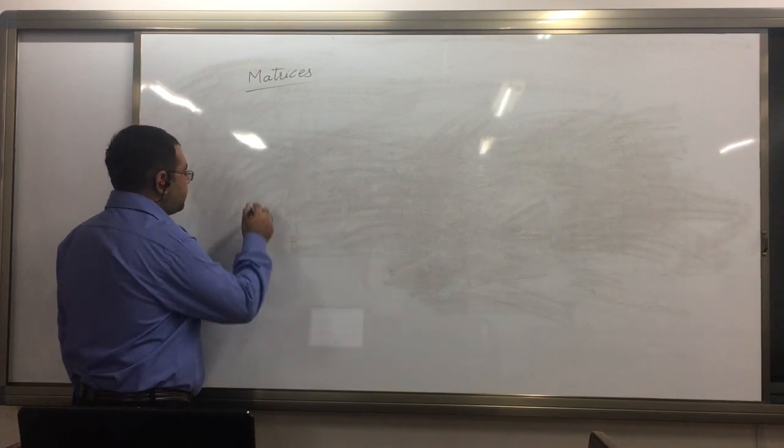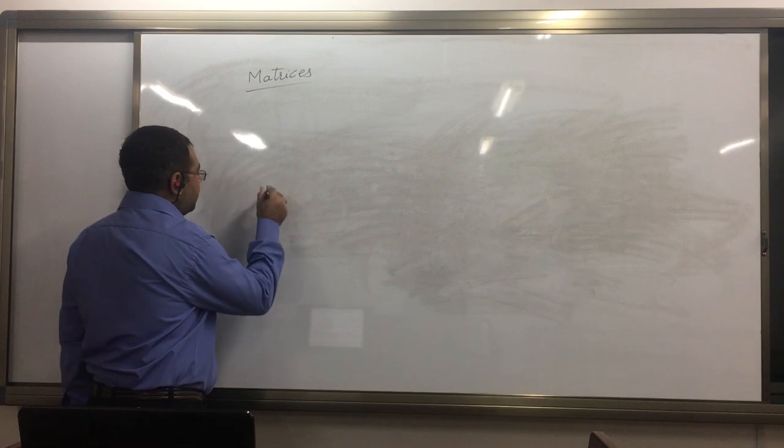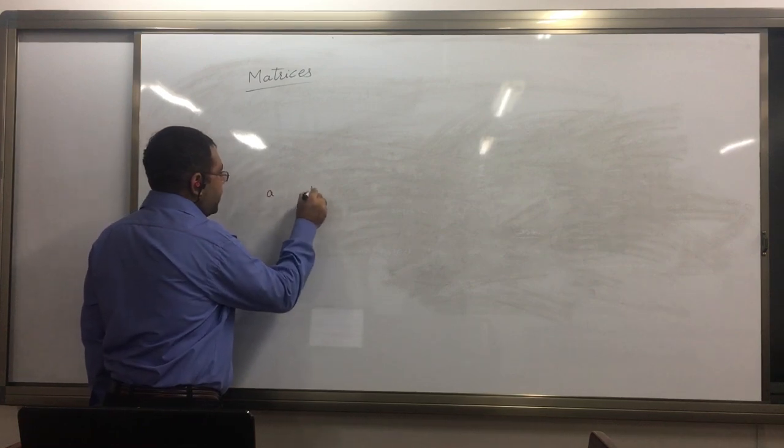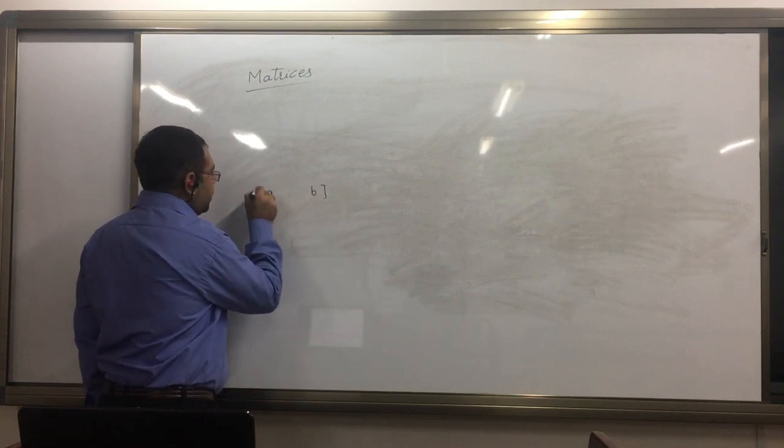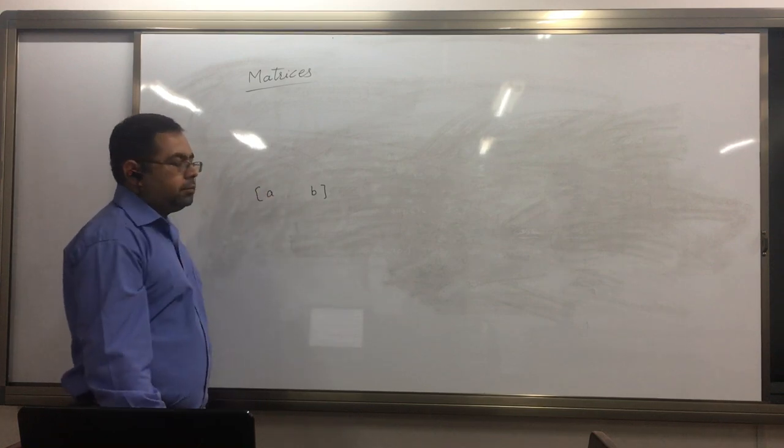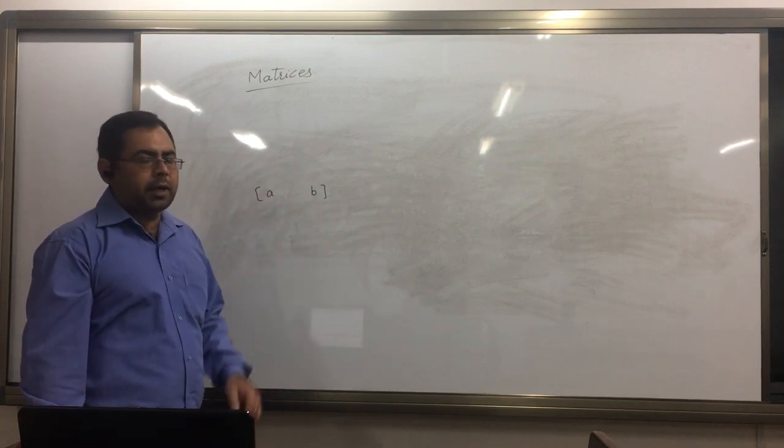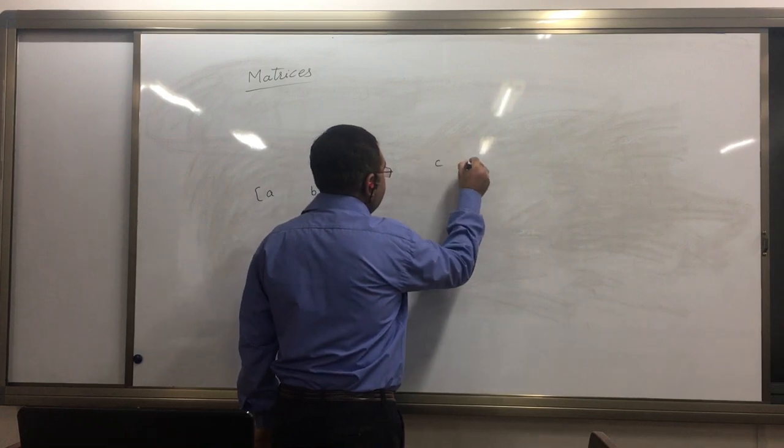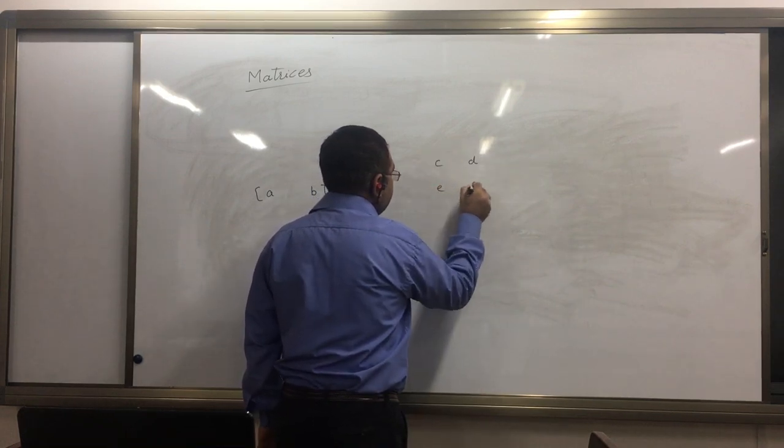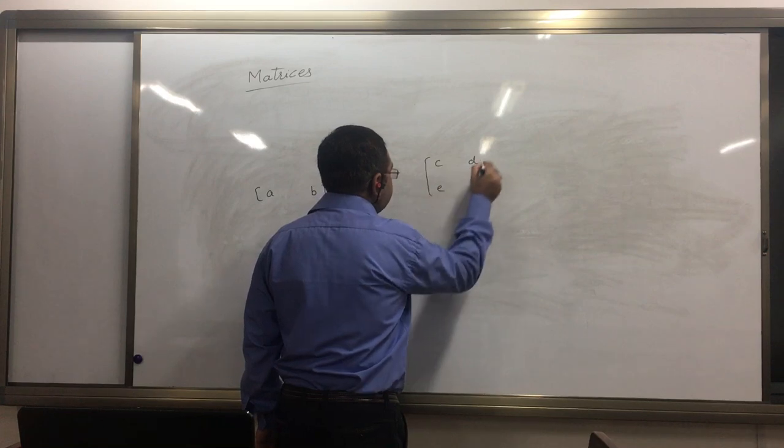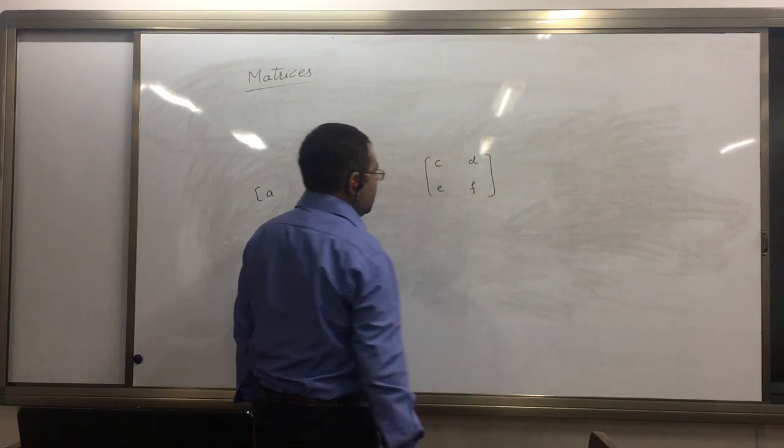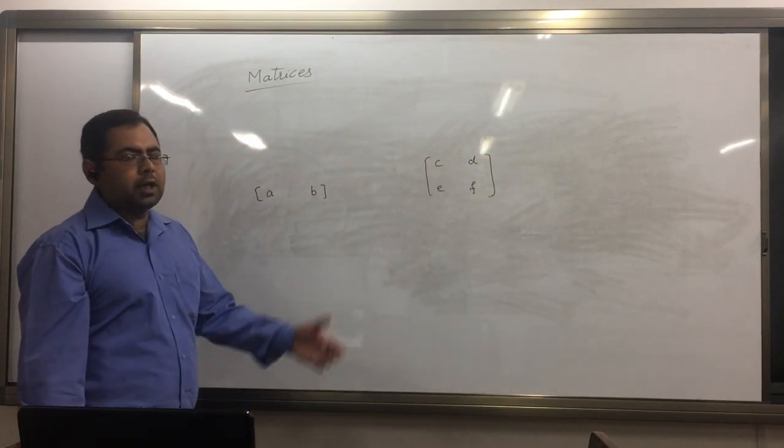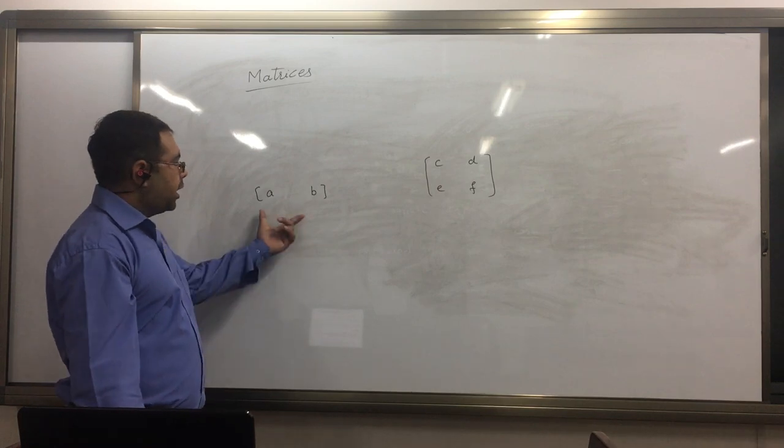Let's say A, B. This is a rectangular array, and if we have square, this is also a matrix. This is also a matrix.